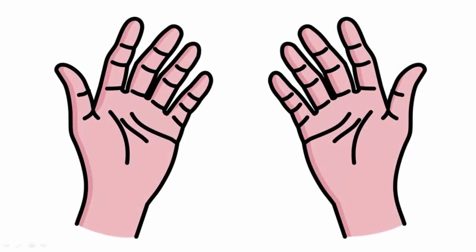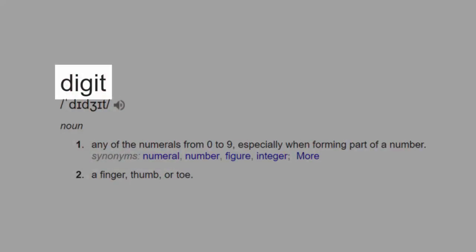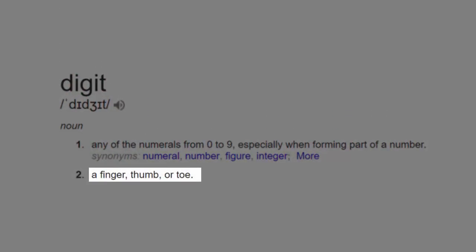The great thing about hands is you can always count on them. But have you ever thought about how the design of your hands has impacted the numbers we use every day? It's no coincidence that the word digit refers to fingers and thumbs and to the numbers we use.